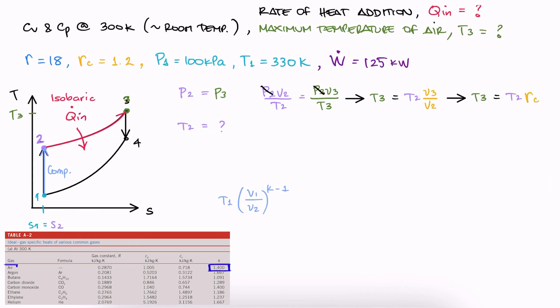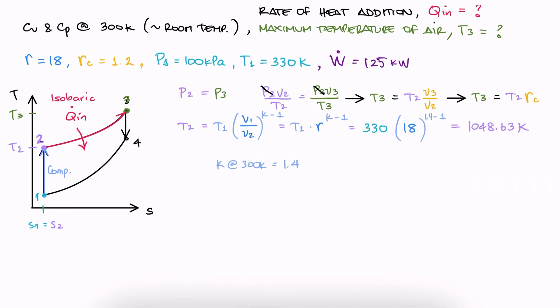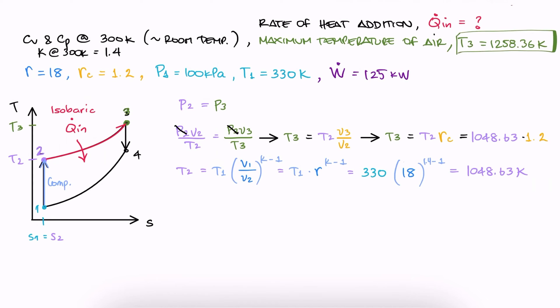We are going to use one of the three expressions derived during the Isentropic Processes 12-minute lecture. We look up K for air at 300 Kelvin, assuming that's room temperature. We substitute it and the given compression ratio to find T2, and we then substitute T2 and RC to find T3.